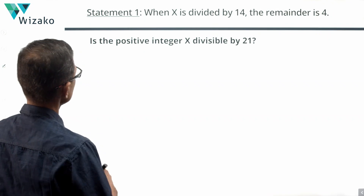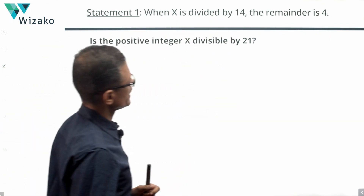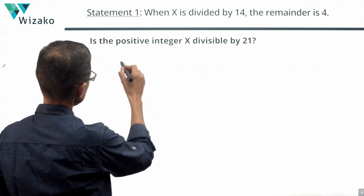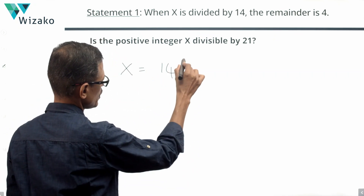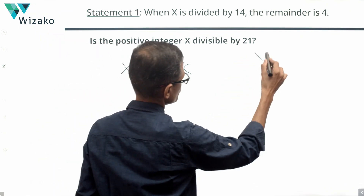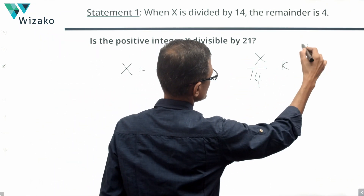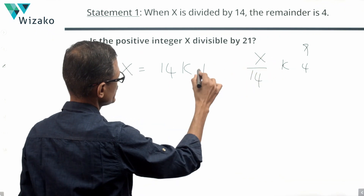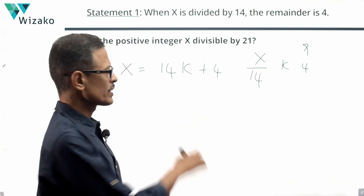Statement 1 tells us that when x is divided by 14, the remainder is 4. So x is such a number that x = 14k + 4, where k is the quotient.